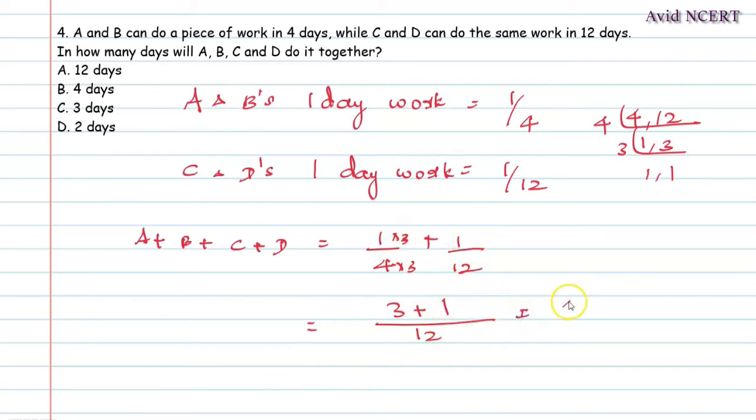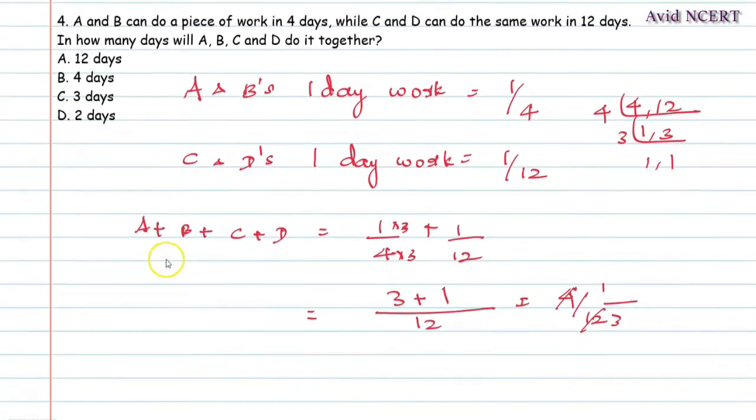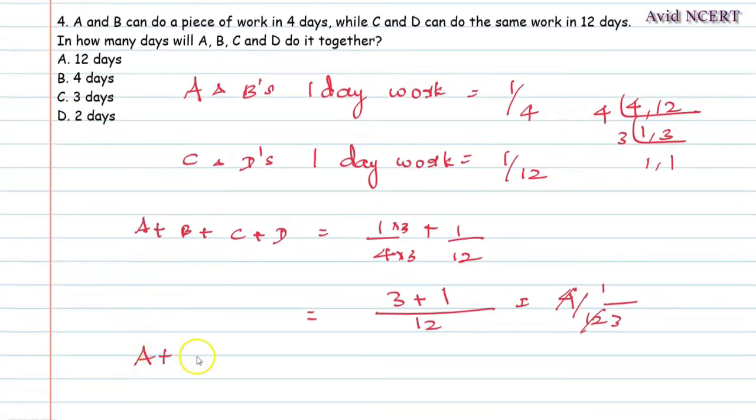Which equals 4 by 12. Simplifying this, 4 one times, 4 three times. From this we know that this has to be inverted. So A plus B plus C plus D equals 3 days.